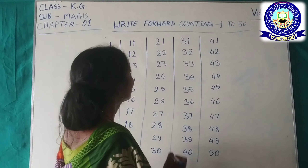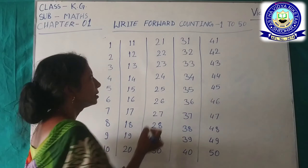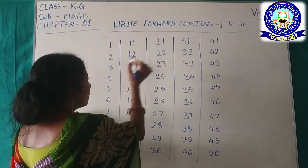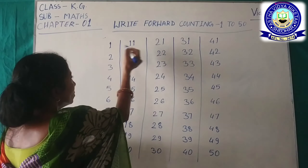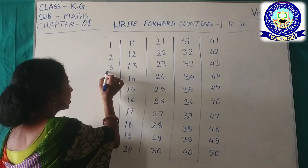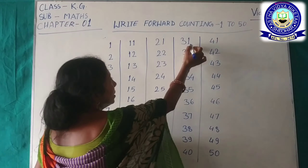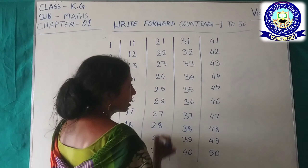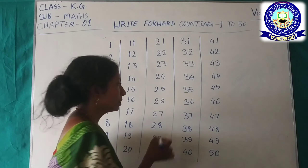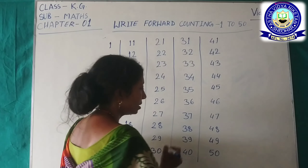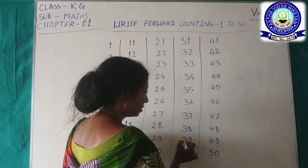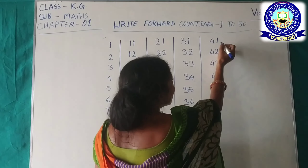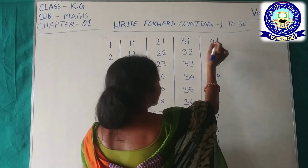30. Then we have 30, followed by 31. This is 3 and this is 1 — 31, 32, 33, 34, 35, 36, 37, 38, 39, 40, 41.